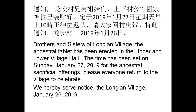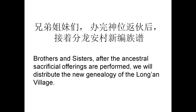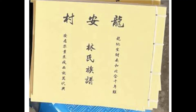My cousin wrote me in January with a message going out to everybody: the brothers and sisters of the Long An village — the ancestral tablet has been erected in the upper and lower village hall, and they set a time for a ceremony for everybody to gather. From the information we now had from this genealogy, they were able to put this ancestral tablet together in the community hall, going from generation number one of Lin Gongbi all the way down through Lin Chongsan. Afterwards, after the sacrificial offerings are performed, they'll distribute this new village genealogy. To be able to contribute to my village restoring their heritage — for some third- or fourth-generation Chinese American — it doesn't get any better than this.